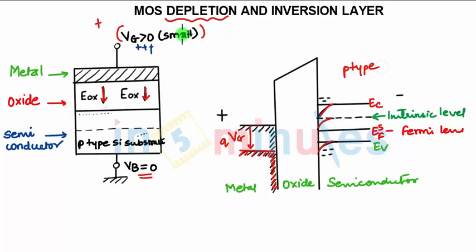But since the value is small, the number of electrons at the boundary is less. Since the electrons are attracted, the holes are repelled and they move towards the P-type substrate.